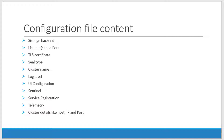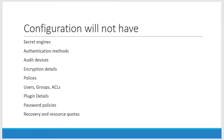We will have a detailed discussion about each part. To get started quickly, we will do a configuration file with the storage backend and listener. The configuration file will not have information about the secret engine, authentication methods, audit devices, encryption details, policies, users, groups, access control lists, plugins, recovery, and resource quotas. All this will be done once the vault is started — it will not be provided as input through the configuration file.